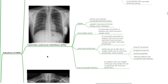Implantable cardioverter defibrillators sense and analyze myocardial electrical activity and are capable of pacing and shock therapy when necessary. These are used post-cardiac arrest for secondary prevention in patients who have survived a cardiac arrest, for ventricular arrhythmias, and for patient groups at high risk of sudden death due to ventricular arrhythmias, which includes long QT syndrome, Brugada syndrome, cardiomyopathies, and selected patients with congenital heart disease.